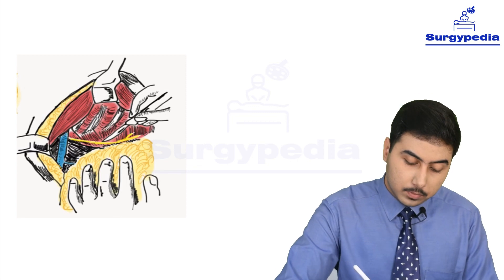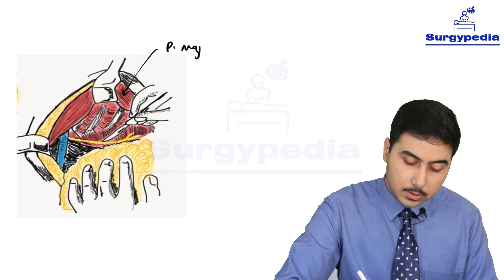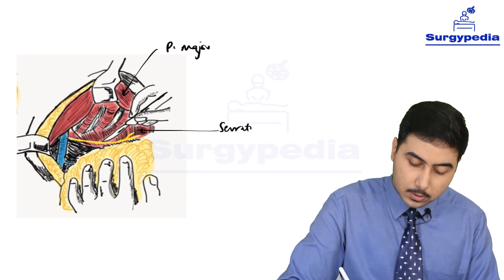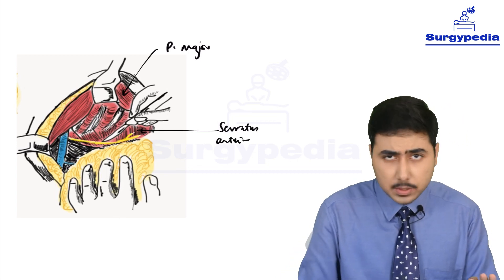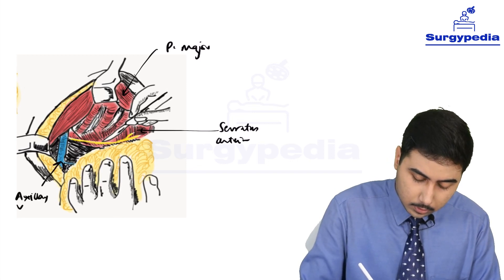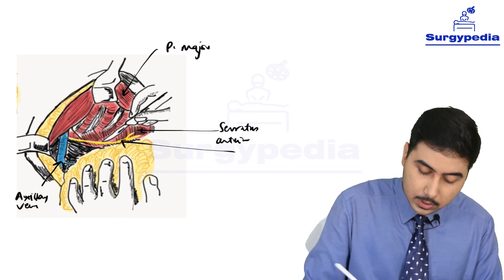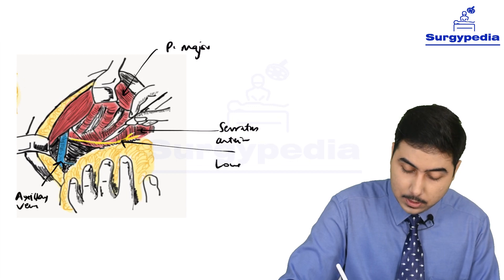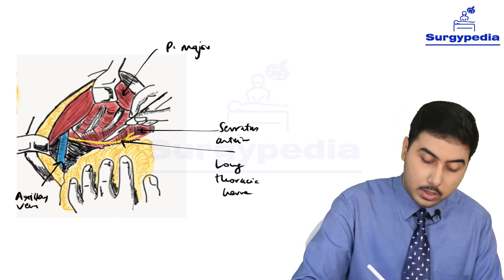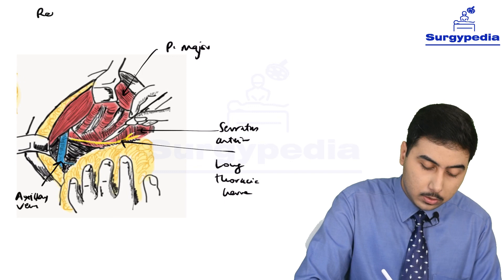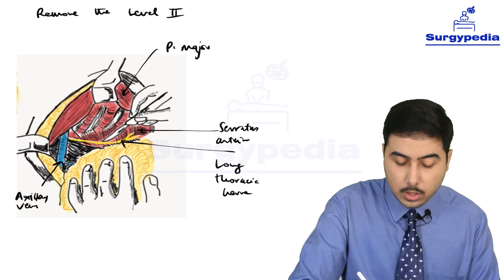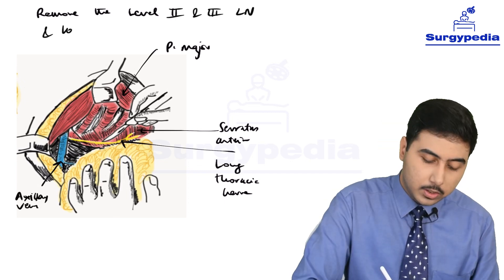After dividing the pectoralis minor, the diagram shows the pectoralis major, the ribs, and the serratus anterior muscle. The pectoralis minor is not visible as it has been divided. The axillary vein is visible. Importantly, we can see the long thoracic nerve. After dividing the pectoralis minor, we remove the level two and three axillary lymph nodes and loose areolar tissue from the axilla — level one was already removed.